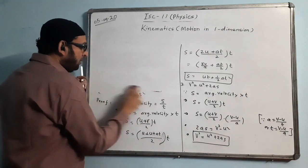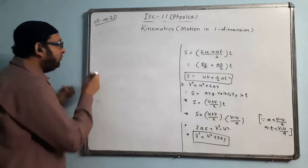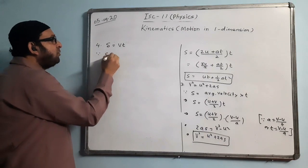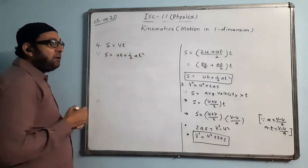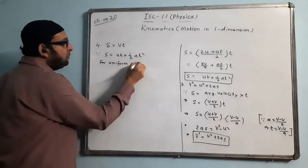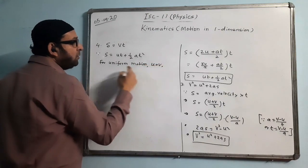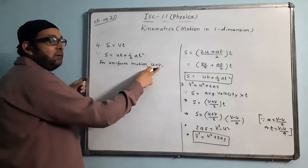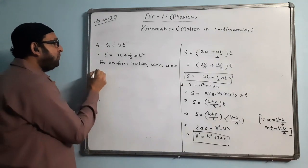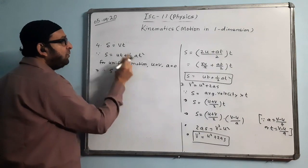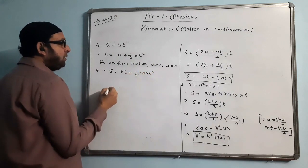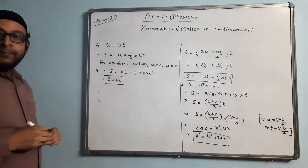Now formula number 4, which is the easiest to prove: s = vt. We start from the already proved s = ut + ½at². For uniform motion, u = v because velocity is constant, and a = 0 because a = (v − u)/t and v = u. Substituting: s = vt + ½ × 0 × t² = vt. This is the formula for uniform motion.